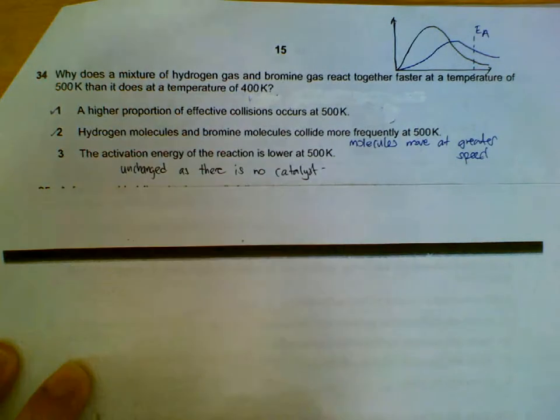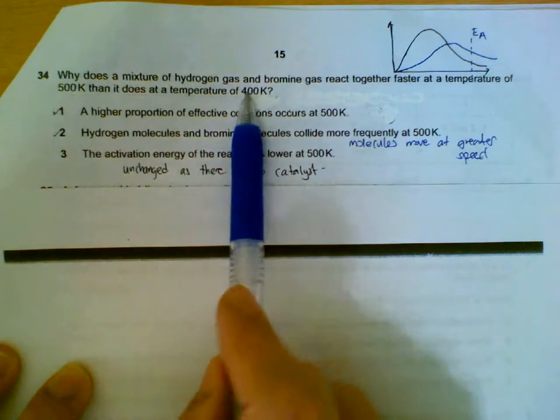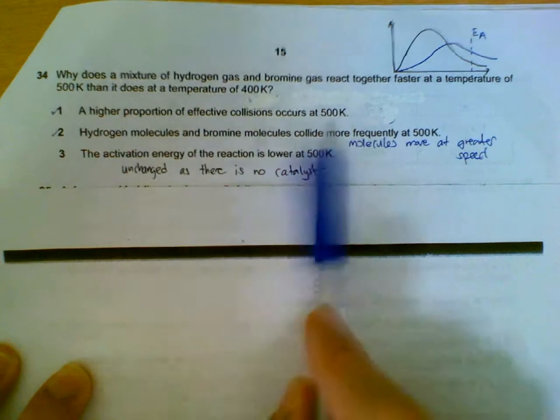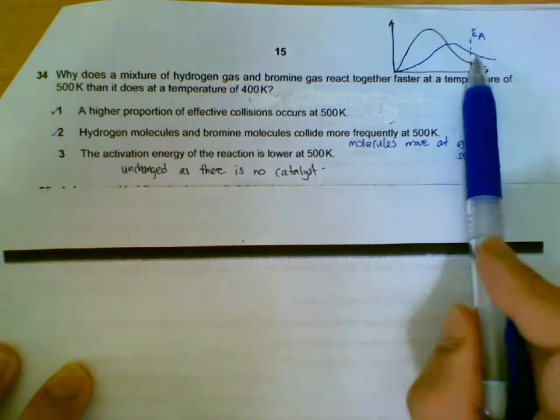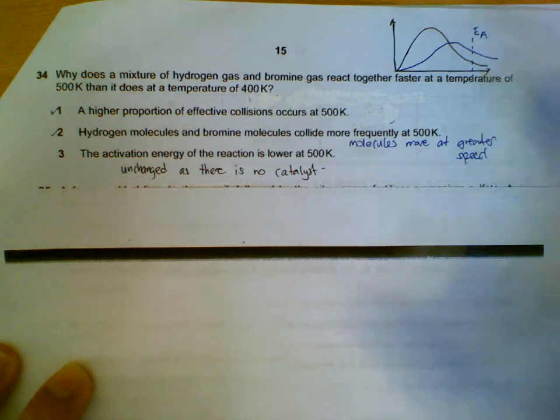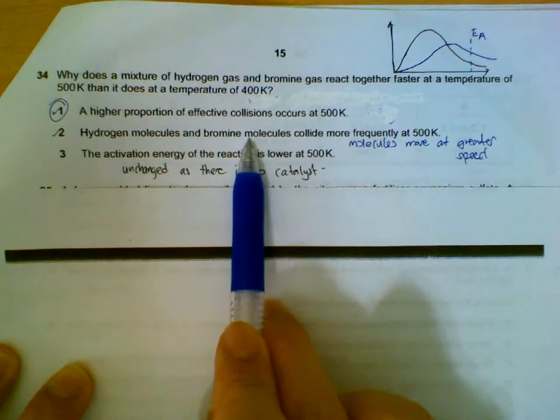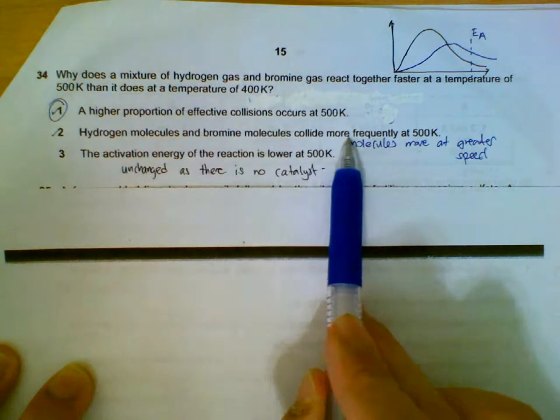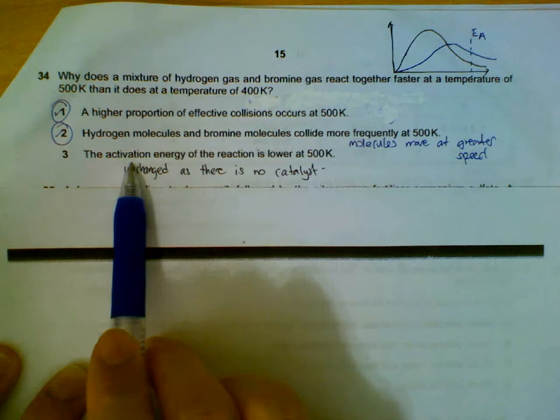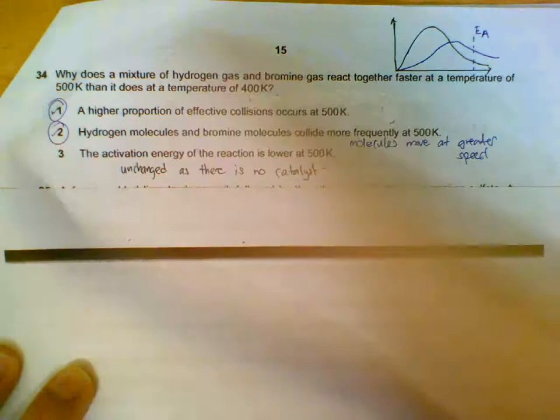Number 34: why does the mixture react faster at a higher temperature than at a lower temperature, 500K vs 400K? If you remember your Boltzmann distribution, at higher temperature you have more portion of molecules with effective energy, so statement one is correct. When they are at a higher temperature they move faster, they have more kinetic energy, and when they move faster there's a higher chance of them colliding, so the collision frequency is higher. Activation energy doesn't change with the temperature unless we introduce a catalyst or take away a catalyst, so statement three is wrong.